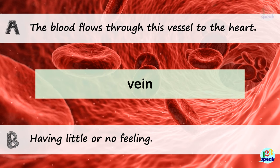Vein. A: The blood flows through this vessel to the heart. B: Having little or no feeling. The correct answer is A — 'The blood flows through this vessel to the heart.'